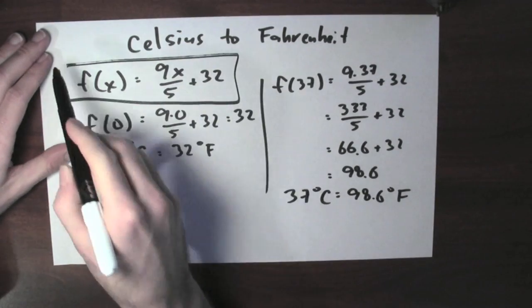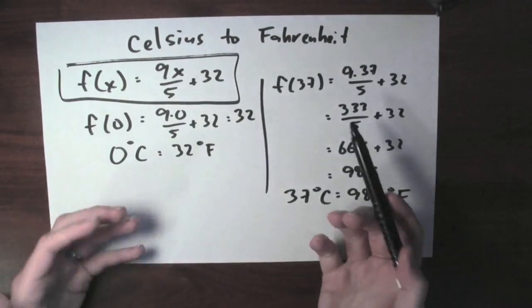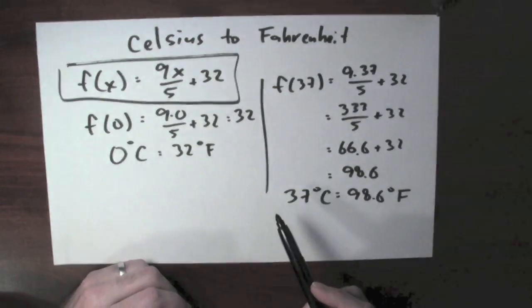So this function takes in something in Celsius and spits out something in Fahrenheit. Unit conversion is an example of a function, but hardly the coolest example.